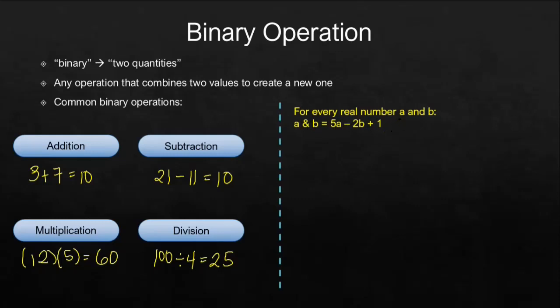Take note that there is a condition here: a and b should be both real numbers. So let's try, for example, a is 3, and then b is 4. Since both of them are real numbers, let's try substituting their values to this one.